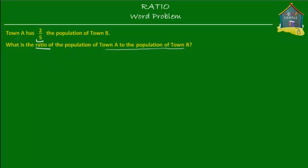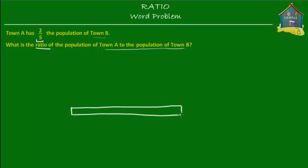Since the population of Town A is expressed as a fraction of the population of Town B, let's take the population of Town B first and try to make a model. Here is the population of Town B, represented by this model — let's fill in some color, say purple. This purple block is the population of Town B, and it is considered as a whole.